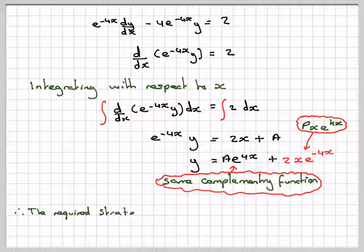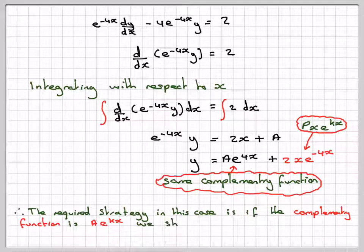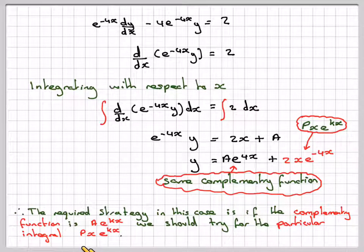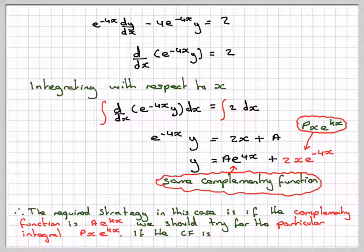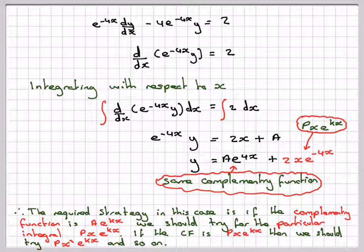So we need to be careful in this sort of case. The required strategy is: if the complementary function is Ae to the kx, we should try for the particular integral px e to the kx. And if the complementary function is px e to the kx, then we should try px squared e to the kx, and so on. This gives us a strategy to solve this type of equation where the right-hand side is some element of the complementary function.